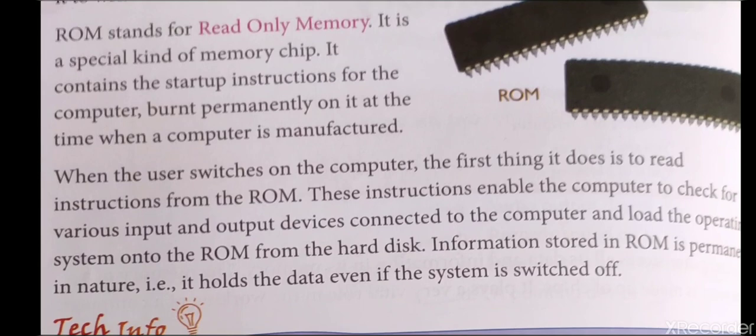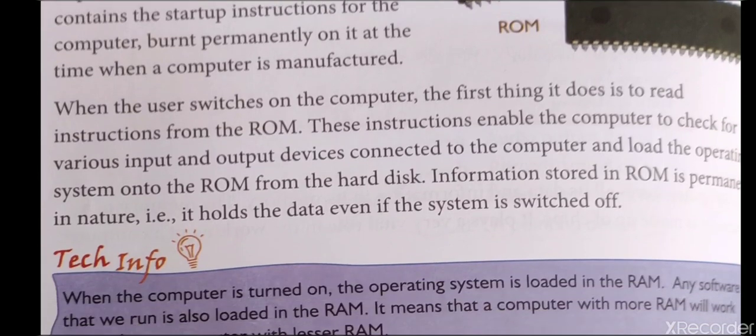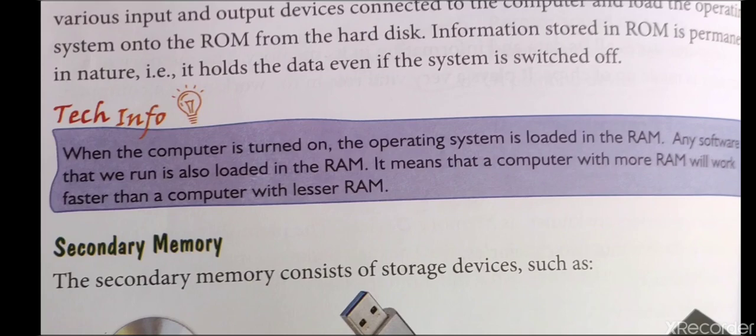Information stored in ROM is permanent in nature — it holds the data even if the system is switched off. RAM में data permanently store नहीं होता, जबकि ROM में permanently store हो जाता है। When the computer is turned on, the operating system is loaded in the RAM. A computer with more RAM will work faster than a computer with lesser RAM.